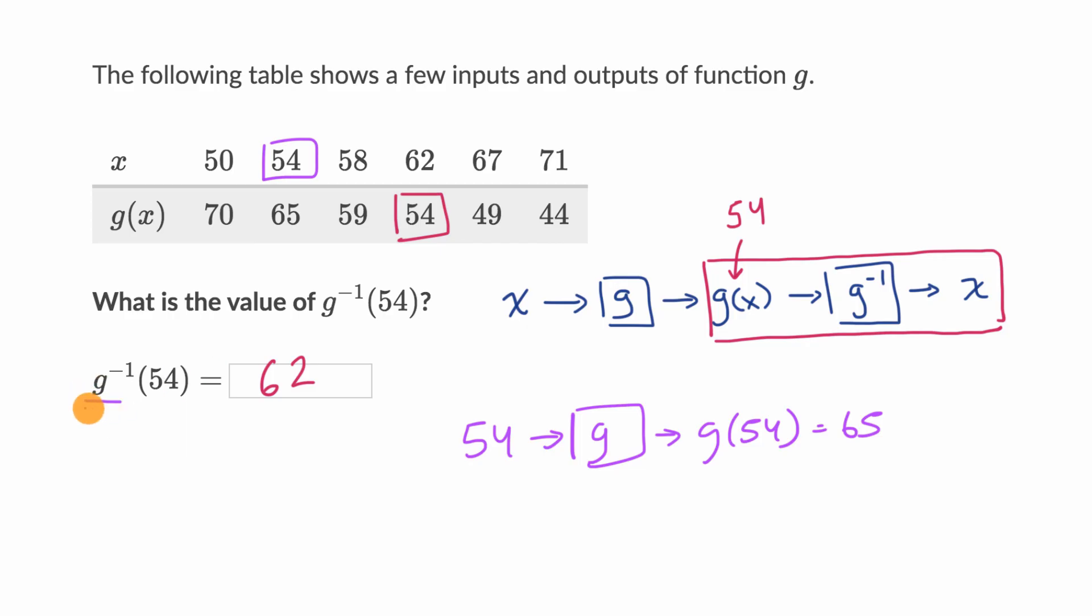But we're looking at the inverse of g. So one way to think about it is, when 54 is the output in g, what is going to be the input? And we see that that is 62.